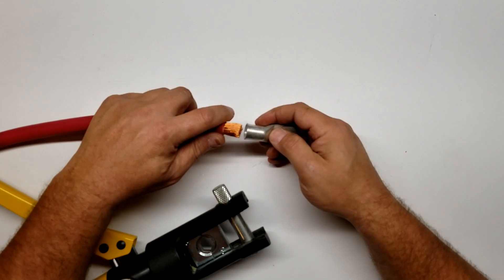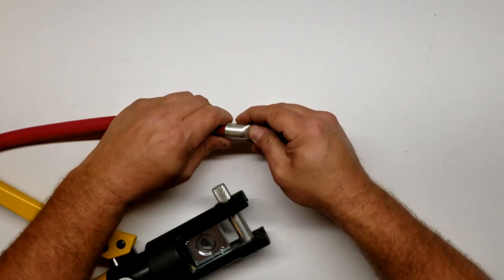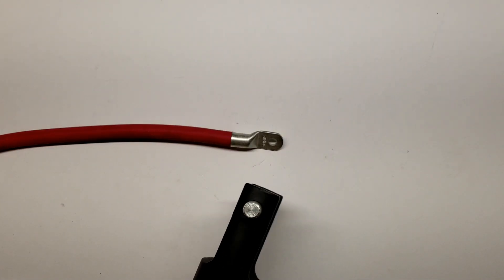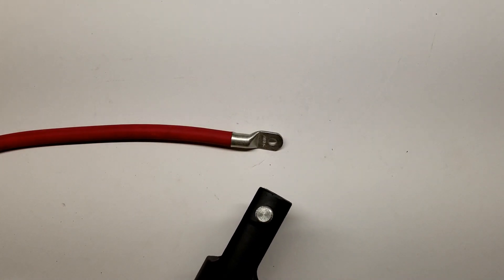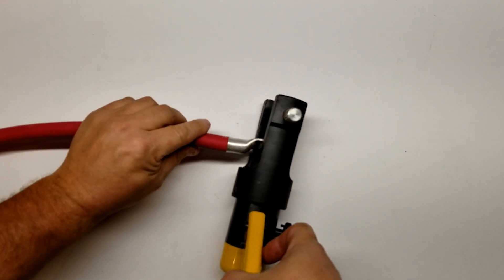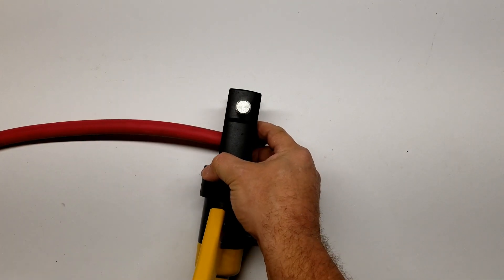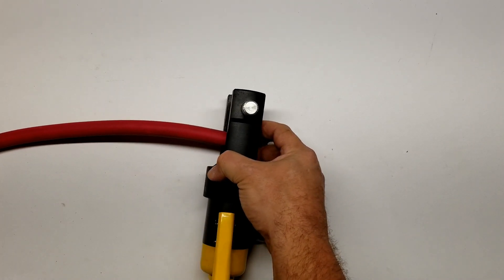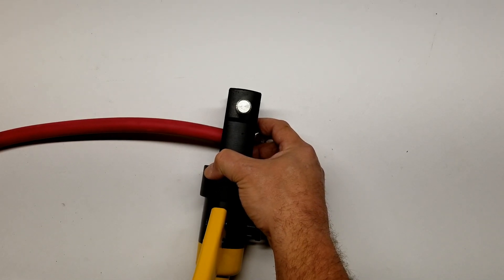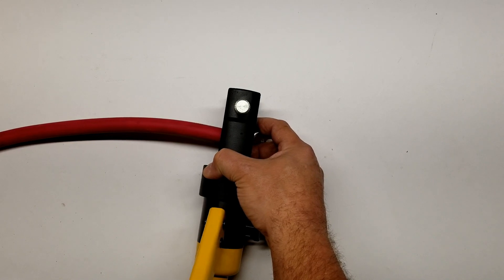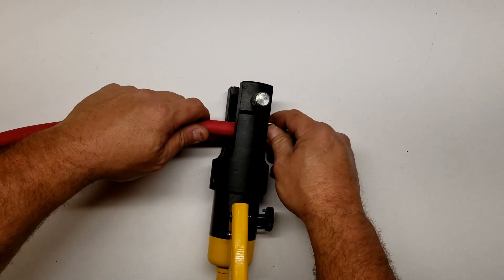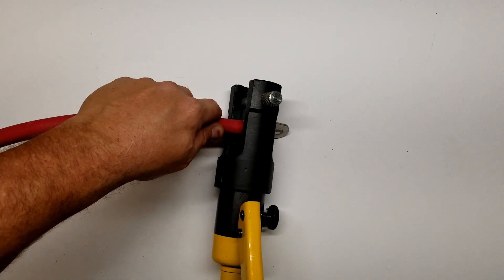I'll get this on the end of the cable. I'll get these dies snugged down here before I really start to crimp it, and then verify everything. Make sure my cable is pushed in all the way.